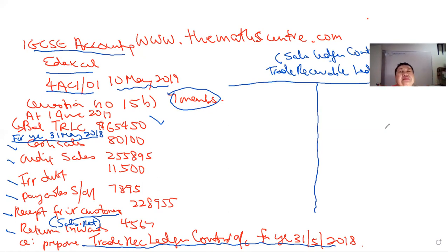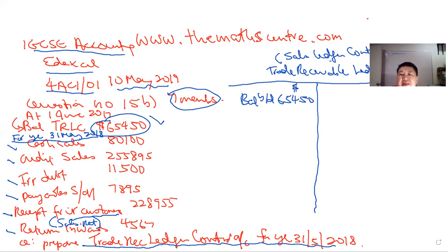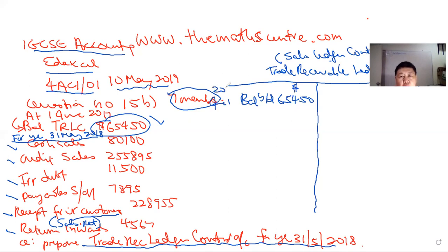So this TRLC is just a summary of all the movements and transactions you would find in your sales ledger. If you have 100 or 1,000 trade receivable customers, this account summarizes them all. We start with the opening balance — the debit balance brought down of 65,450, representing the total owed by all customers as of 1 June 2017.